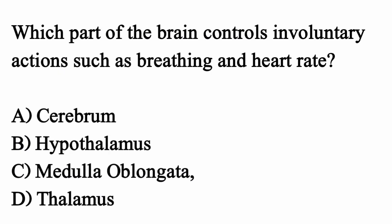Which part of the brain controls involuntary actions such as breathing and heart rate? The correct option is option C: medulla oblongata.